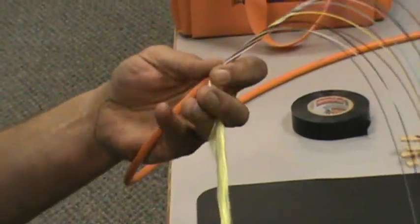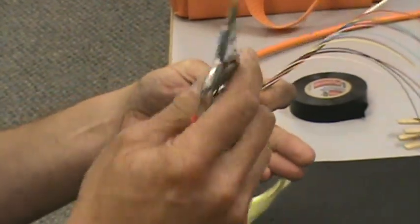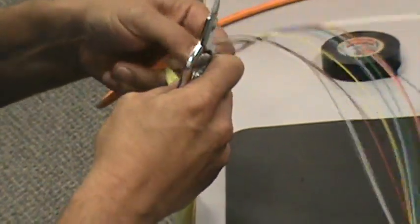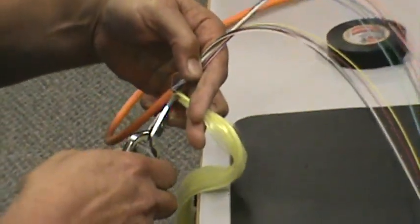You then take your fiber scissors, not snips—these are fiber scissors—and you cut off your strength member, your aramid yarn.